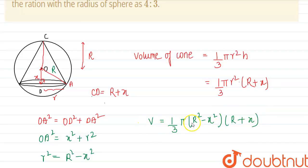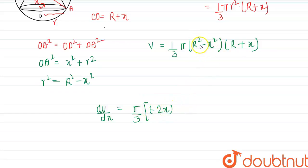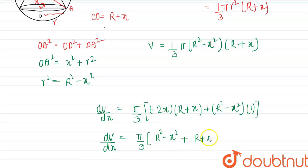Now we can differentiate with respect to X. So dV/dX — taking π/3 as common and applying the product rule — differentiating (R² − X²) gives −2X, and the derivative of (R + X) is 1. So dV/dX = (π/3)[(R² − X²) + (R + X)(−2X)].